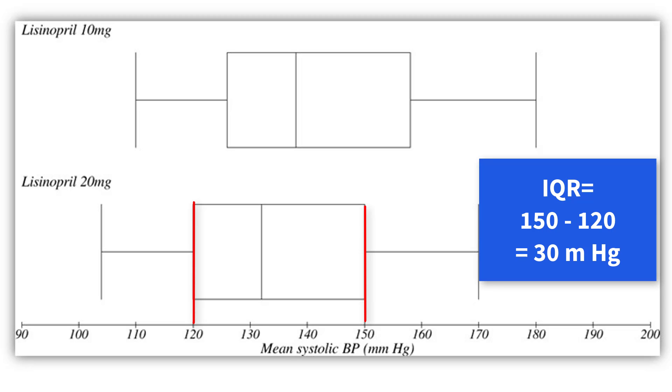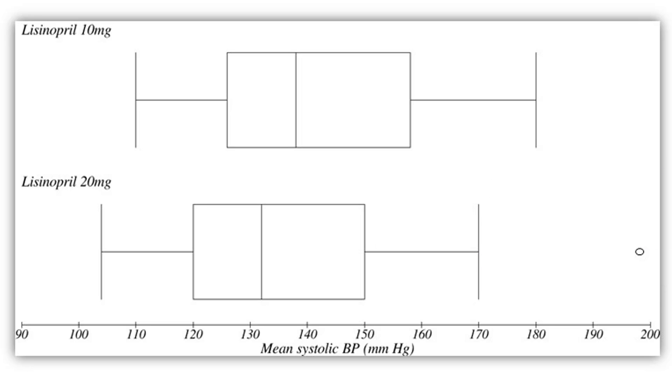The box and whisker plot is called this because it looks like there's a box here in the middle, and then you've got a whisker on one side and a whisker on the other side. The whisker on the left in this situation is the lowest used value.